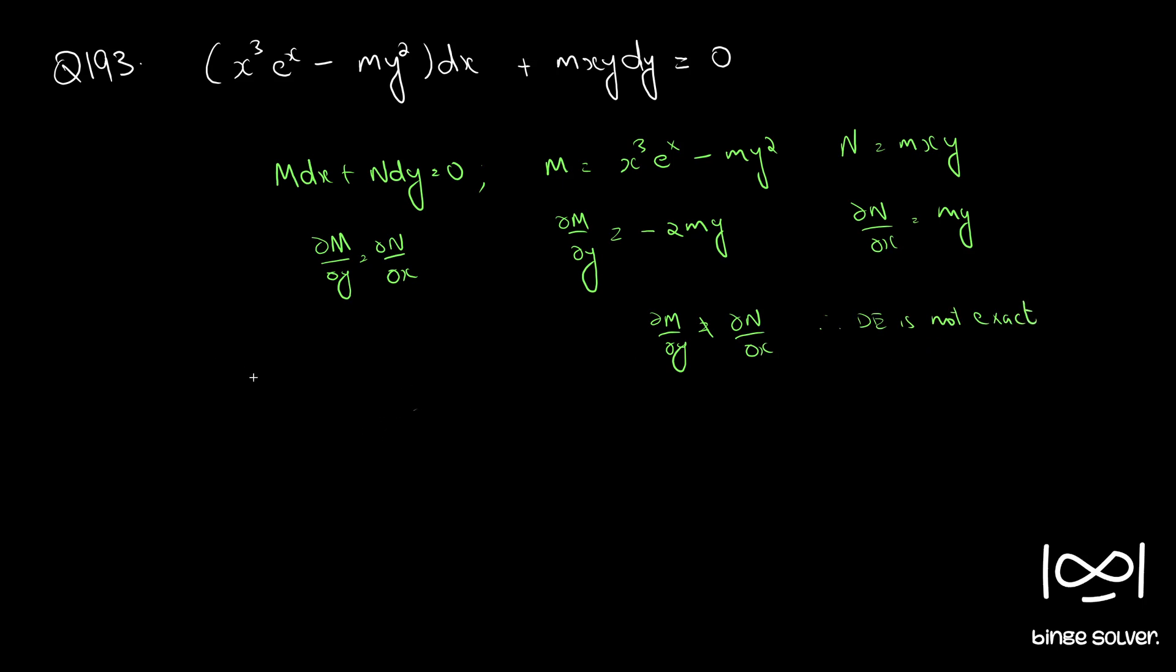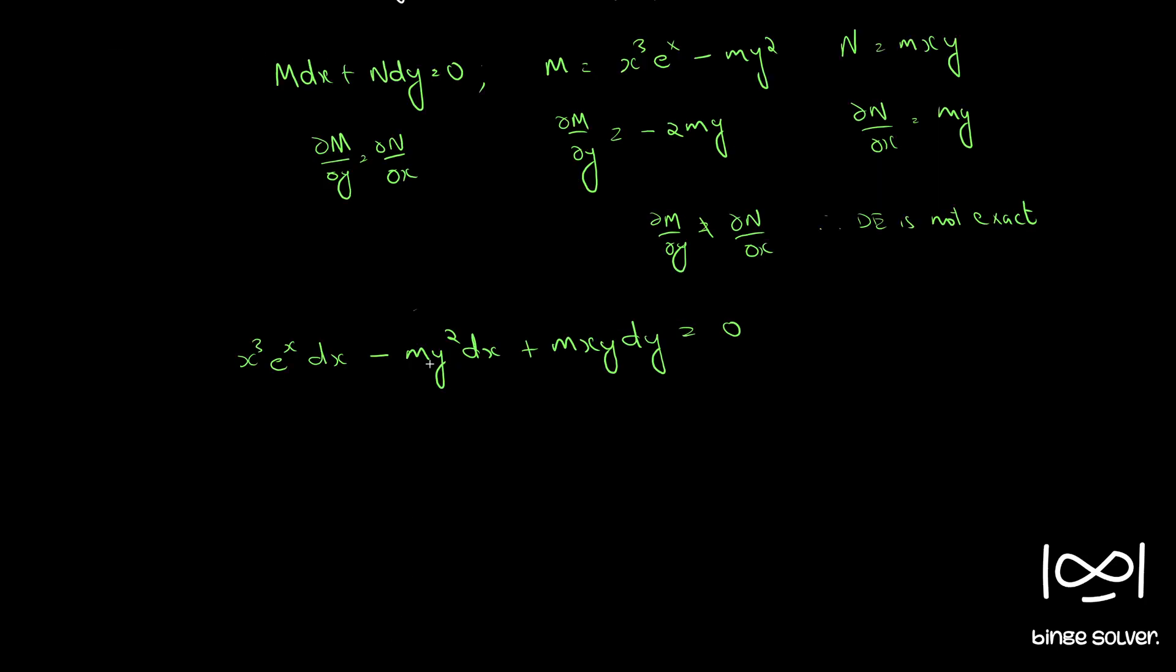We will use other methods. Opening up: x cube e raised to x dx minus m y square dx plus m x y dy equal to 0.